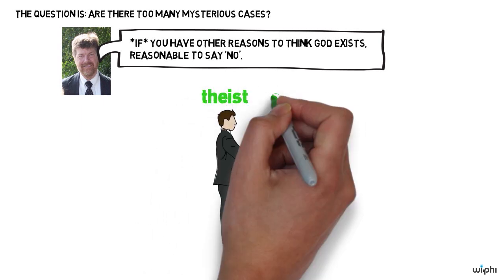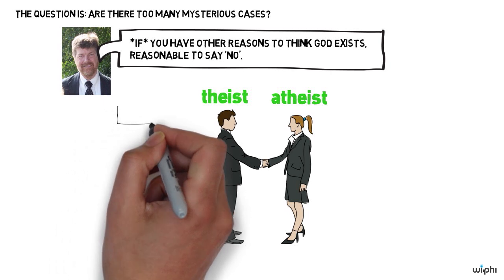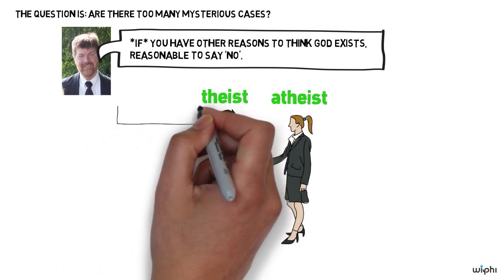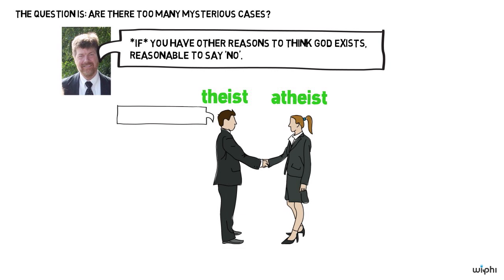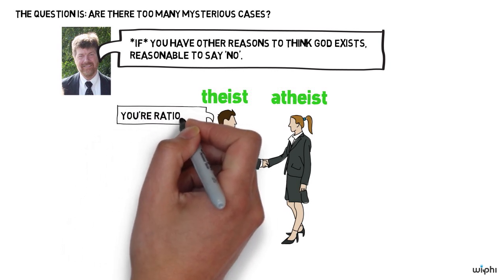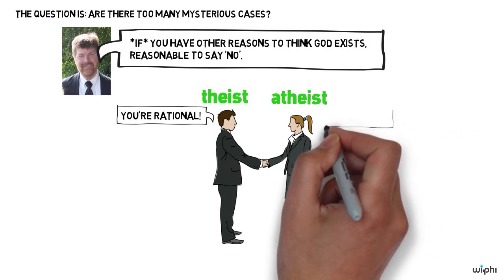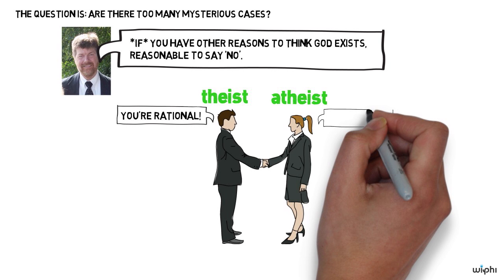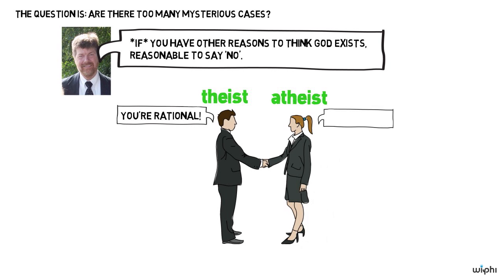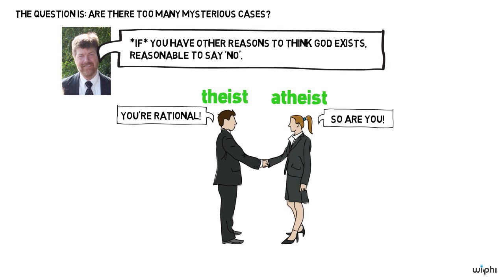This is one of those cases where both the theist and the atheist can say that the other side can be perfectly rational in their beliefs. It's a matter of assessing the evidence differently. In fact, in Rowe's article where he first put forward this argument, he makes this point. He says he thinks it's perfectly reasonable for a theist to continue to believe in God, even in spite of this argument.